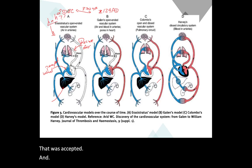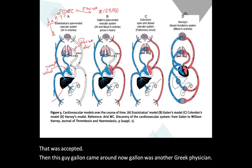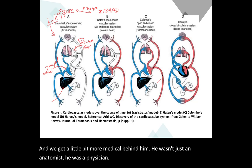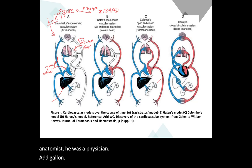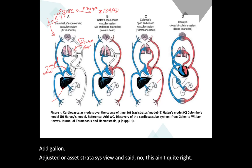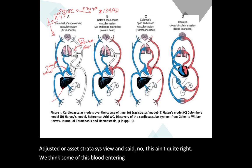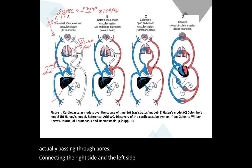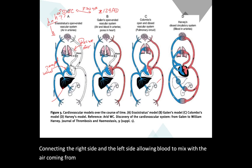Galen adjusted Erasistratus' view and said this isn't quite right. He proposed that some blood entering the right side of the heart was actually passing through pores connecting the right and left sides of the heart, allowing blood to mix with air coming from the lungs inside the heart.